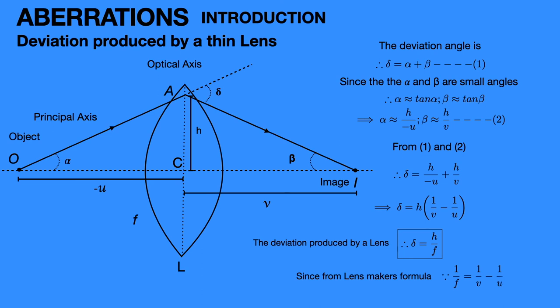Hence the deviation produced by the lens is always δ = H/F. This comes from the lens maker's formula. Here the deviation is directly proportional to the height of the light ray which is incident on the lens. As the height increases, the deviation also increases. As the height decreases, the deviation also decreases.